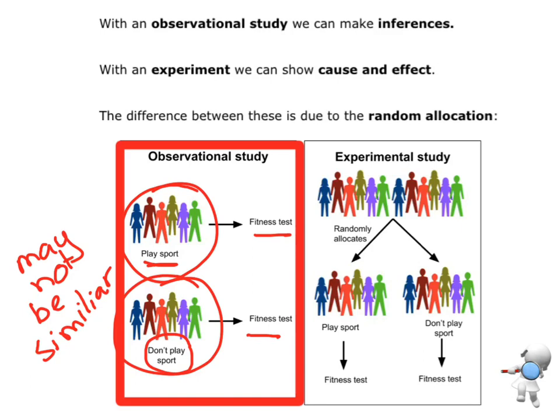And therefore, because these two groups are not comparative, we can only make inferences. So observational studies, you can only make inferences. I suggest that people who play sport are more likely to be fitter. But I cannot prove that.